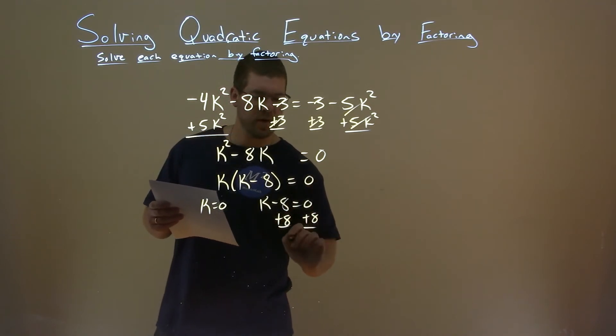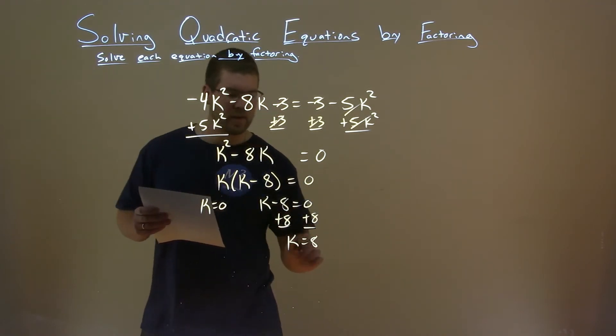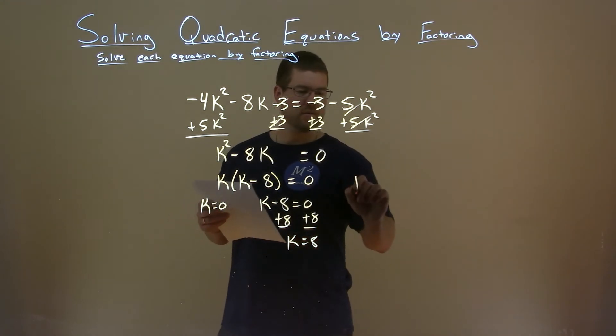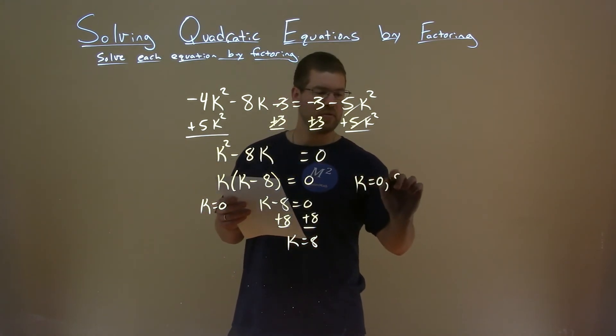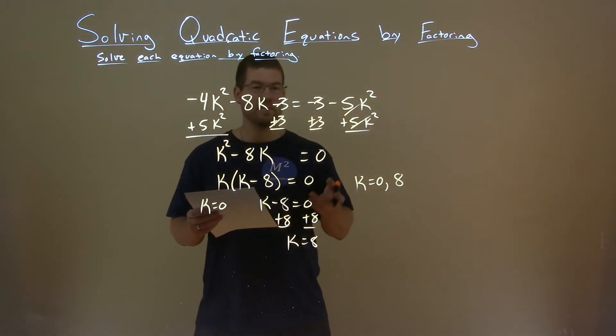Add an 8 to both sides. K equals a positive 8 and so there are two solutions here. K equals 0 and k equals positive 8 and that is our final answer.